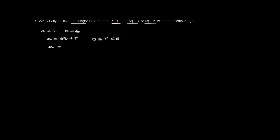We get 6k, 6k plus 1, 6k plus 2, 6k plus 3, 6k plus 4, and 6k plus 5. These are the possible values for a.